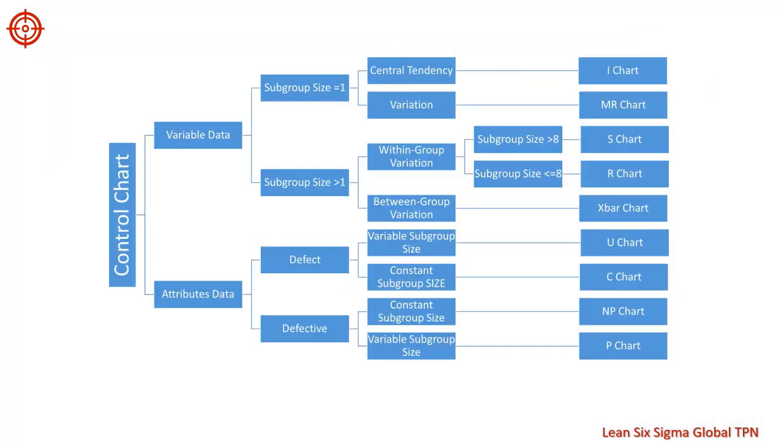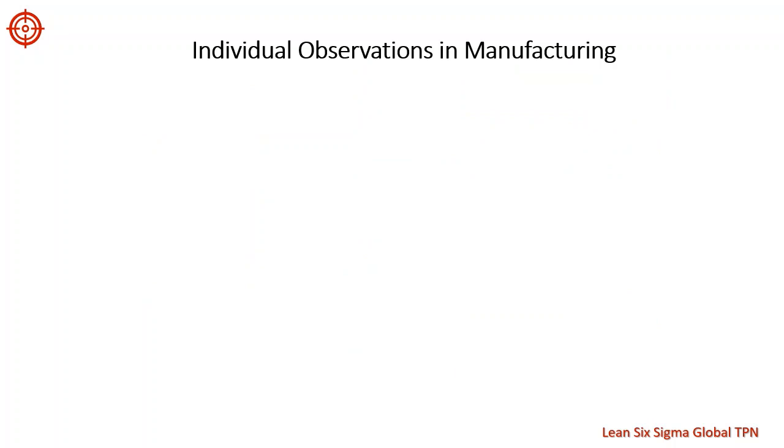We can use a moving range chart and an individual chart to monitor individual observations collected from a process. Both of these control charts are useful when we have variables data and data that have only one observation per subgroup.